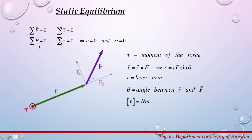For the case when the sum of all forces is equal to zero and the sum of all torques is different than zero, the linear acceleration is equal to zero but the angular acceleration is different than zero. Linear acceleration depends on the force applied to an object and on the mass of the object, while the angular acceleration depends on the applied torque and the moment of inertia.